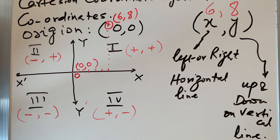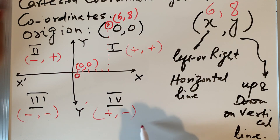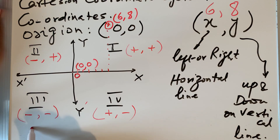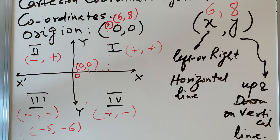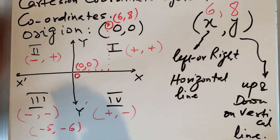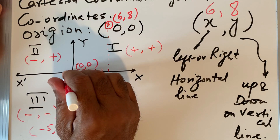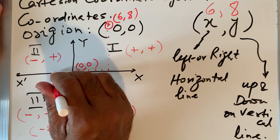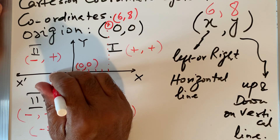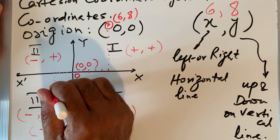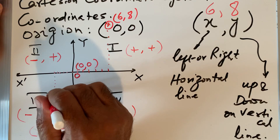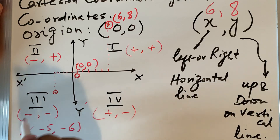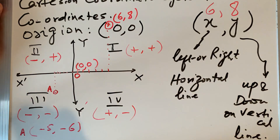For example, if someone asks you to locate the point (-5, -6): both values are negative, so this point is in the third quadrant. I go 5 units left on the x-axis, then 6 units down on the y-axis. I can name this point A, with coordinates (-5, -6).